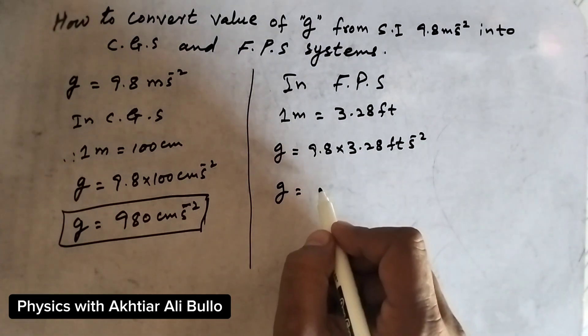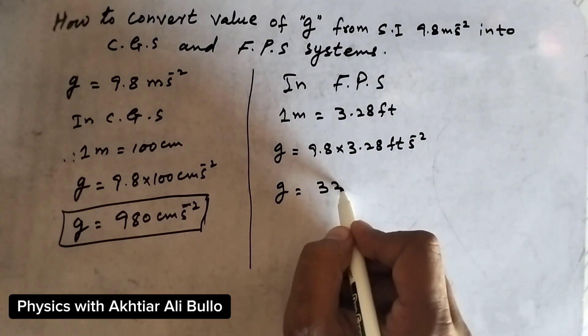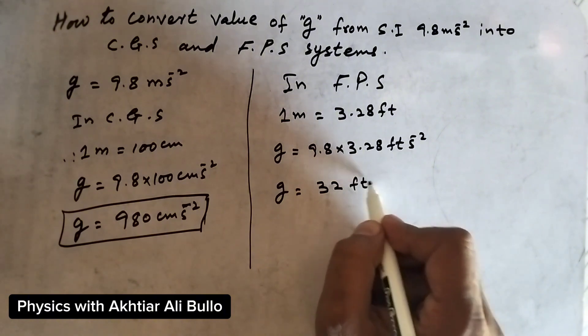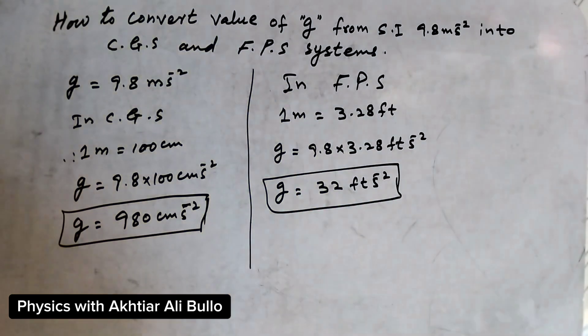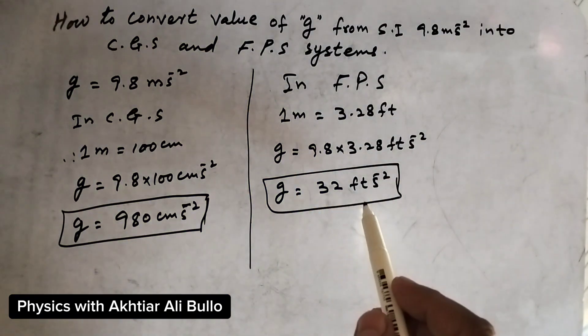When we multiply these values, we get 32 feet per second squared. This is the required value for the FPS system.